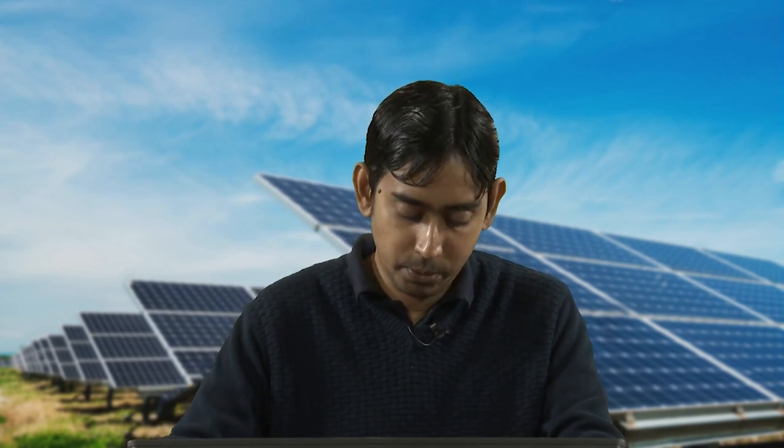The dye should be stable enough to endure 10^8 turnovers, corresponding to 20 years of exposure to sunlight without apparent degradation. In industry, solar cell modules are typically inspected over a 20-year period. The DSSC device must maintain its efficiency and turnover for 20 years without dye degradation. If the dye degrades, the light absorption property suffers and efficiency decreases.